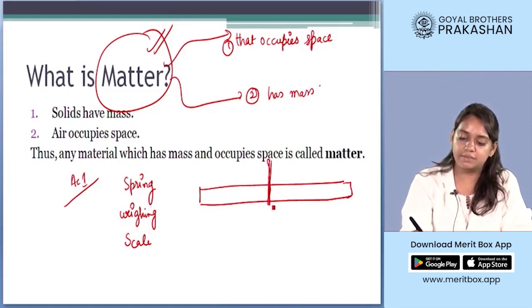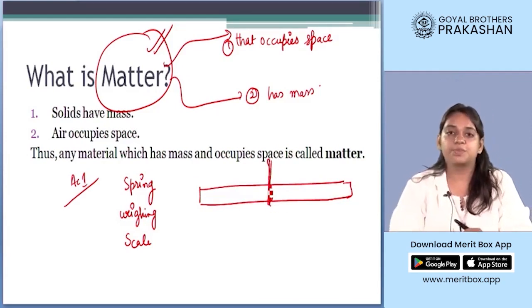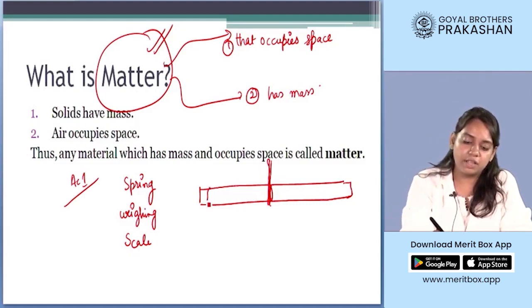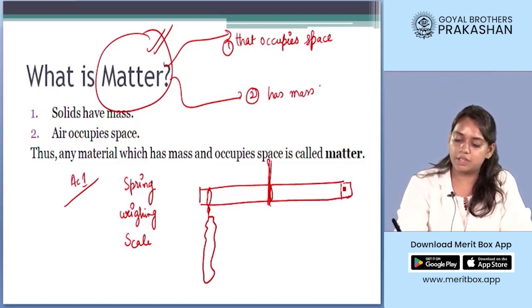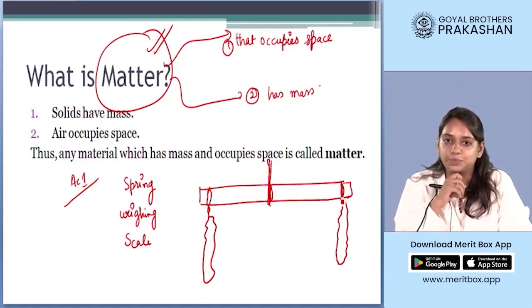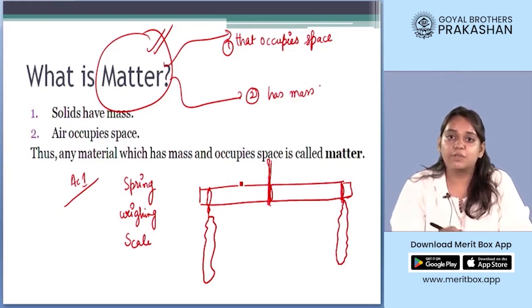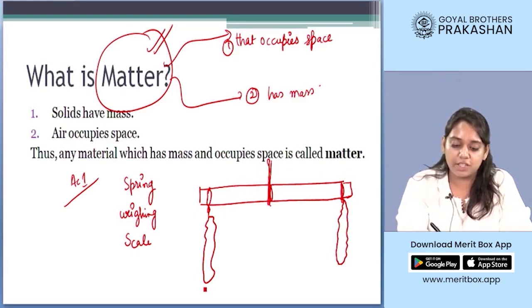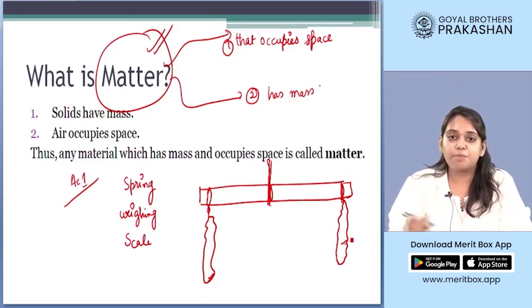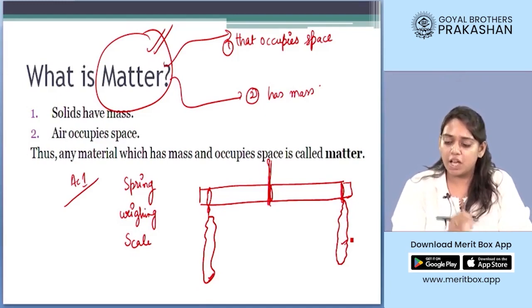On one edge we will hang a deflated balloon, and on the other end as well we will attach a similar kind of deflated balloon. You will observe that this scale is straight, which means the mass of both the deflated balloons is the same.